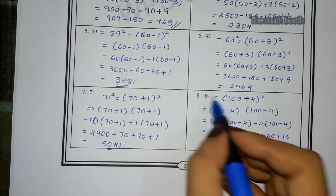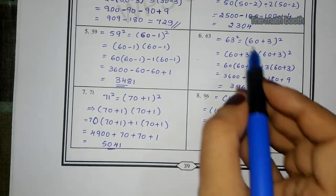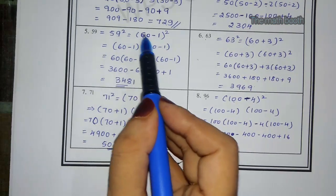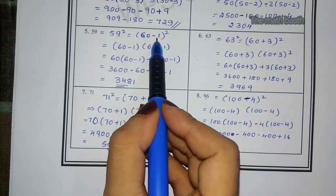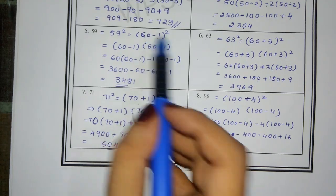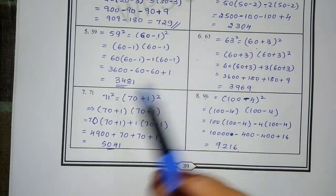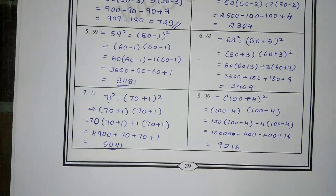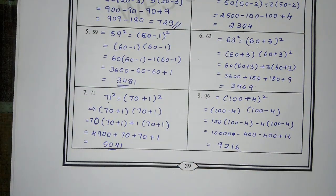In the same way, these problems also done in the same way. Here 96 what we have done, (100 - 4). Here 63 is (60 + 3). Same step. Here 59 what we did, (60 - 1). Easy way whichever we feel we have to take that, either minus or plus. 71, what we have done, (70 + 1). So in this way we had completed learning sheet 22.